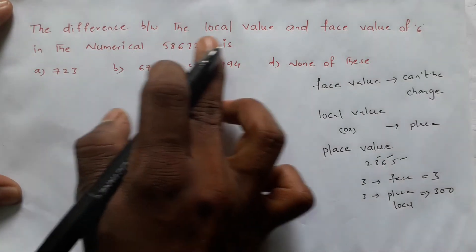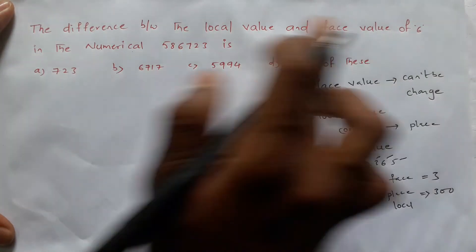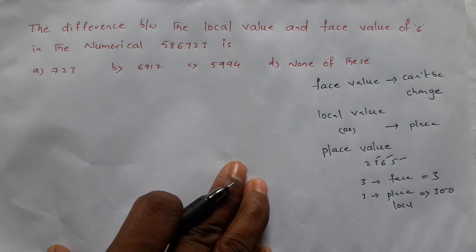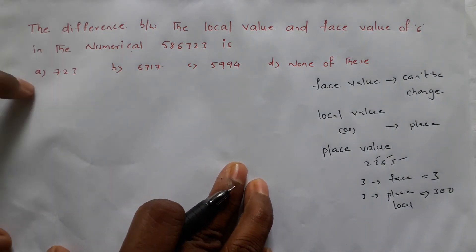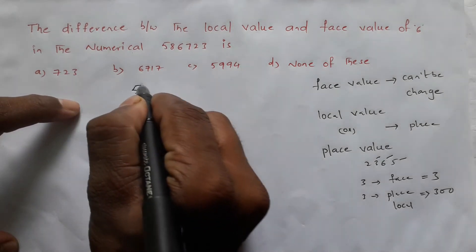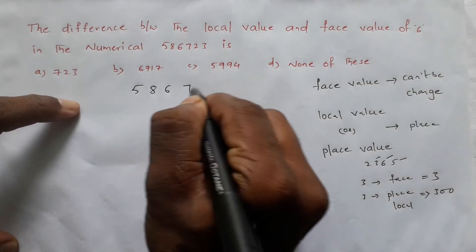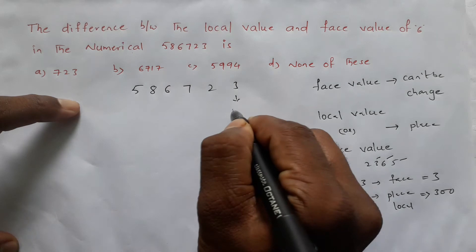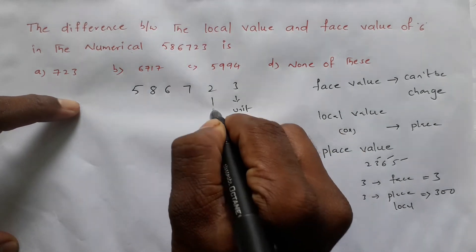Now the question: find the difference between the local value and face value of 6. Take the highest value and lowest value, then subtract. The number is 586723 - units place, tens place, hundreds, thousands.